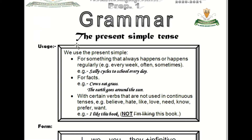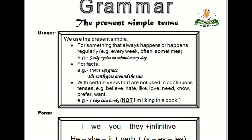First of all we will talk about the usage of the present simple. We use present simple for something that always happens or happens regularly. For example, something happens every day, every week, or with words like every, often, sometimes. For example, Sally cycles to school every day — this is a habit.